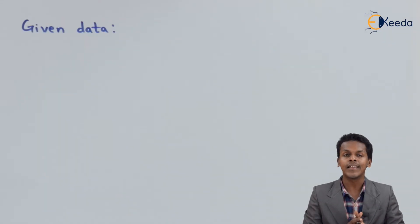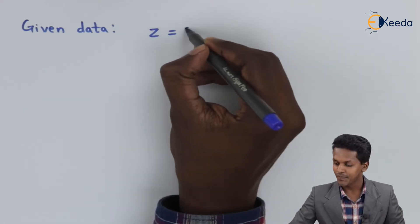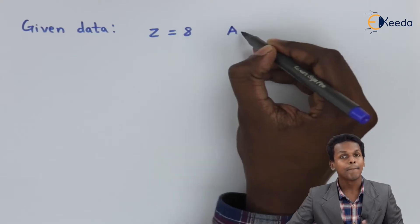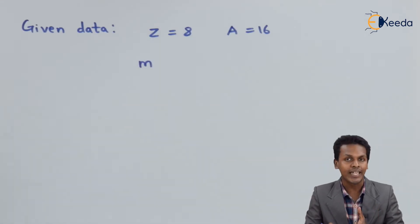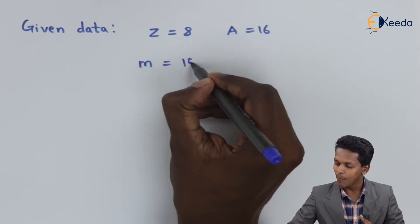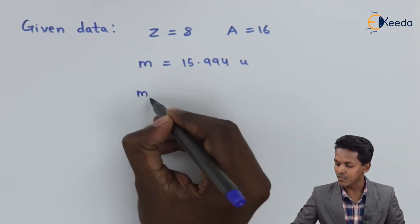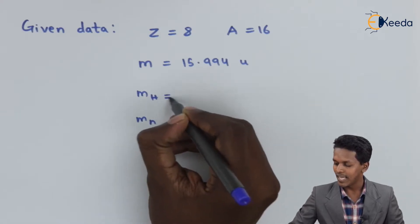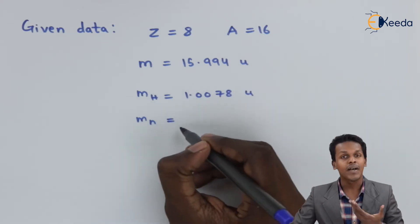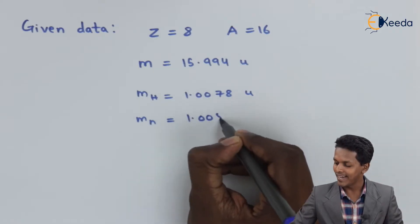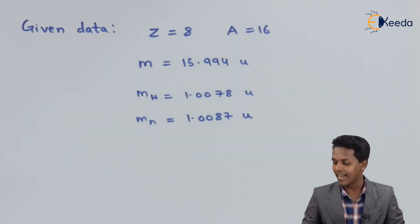The question is regarding the oxygen nucleus. The atomic number Z is 8, the atomic mass number A is 16, and the observed mass of the oxygen atom is 15.994 unified mass units. The mass of hydrogen is 1.0078 unified mass units, and the mass of the neutron is 1.0087 unified mass units.